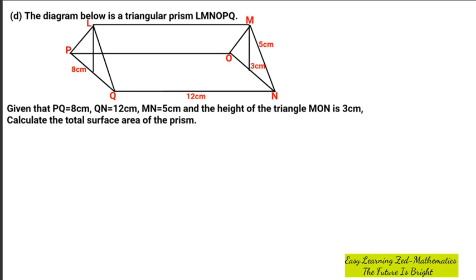Given that PQ is equal to 8 cm, NQ is equal to 12 cm, MN is equal to 5 cm, and the height of the triangle MON is 3 cm. Calculate the total surface area of the prism.